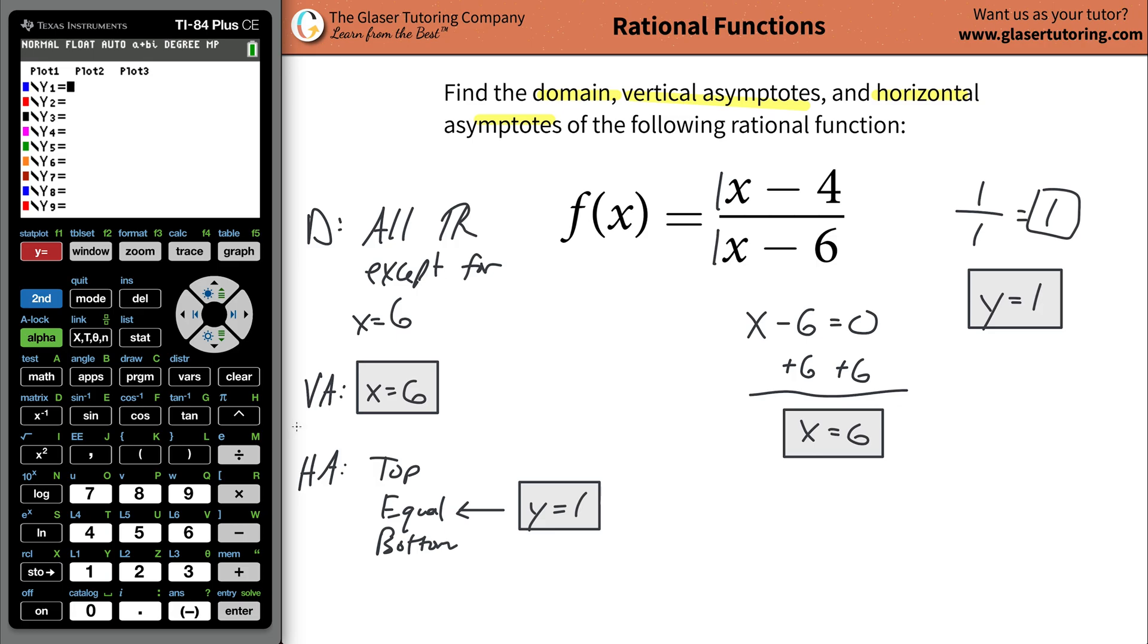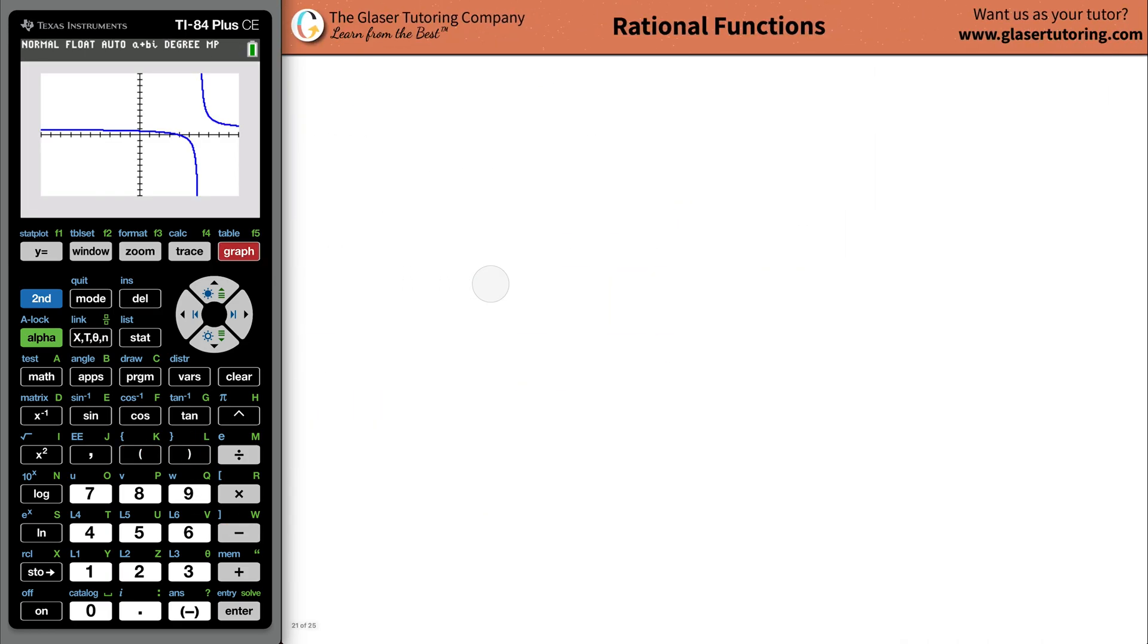Now what you can do is you can graph this thing if you wanted to kind of get a feel for it. Let me just go back to here. And just graph it. So open parentheses, do x minus 4, close the parentheses, then hit divided by, then open the parentheses again, and then do x minus 6. And let's see what we have. Now this is the function.